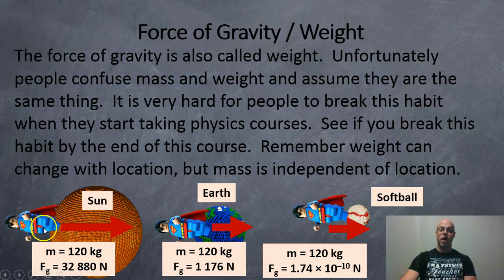For example, this superhero has a mass of 120 kilos on the sun, on the earth, and on the baseball in the middle space somewhere. 120 kilos does not change with location, so the mass never changes. But this superhero does weigh 32,880 newtons on the sun, 1176 newtons on the earth, and 1.74 times 10 to the negative 10 newtons, or 0.174 nanonewtons, on this softball in the middle of nowhere. So, weight changes with location, mass does not.